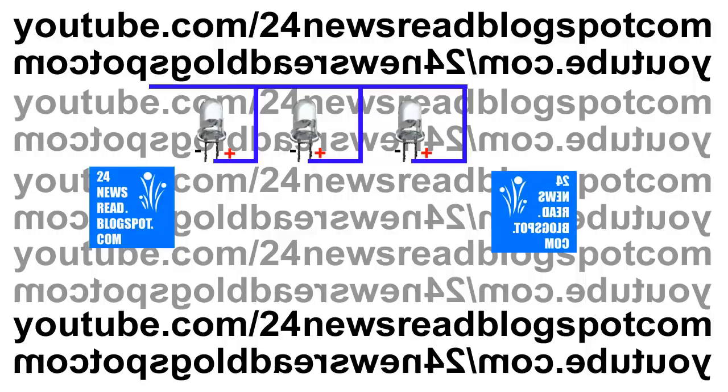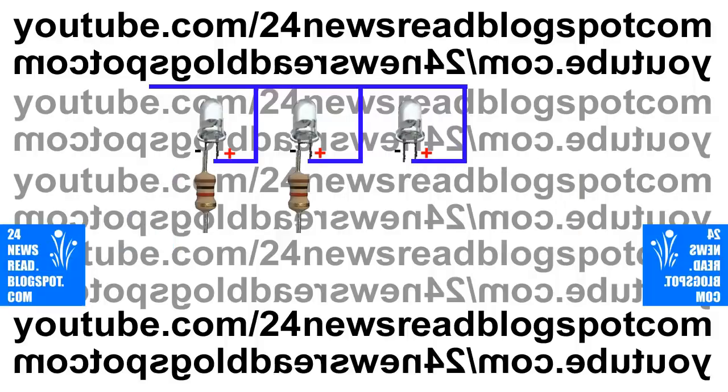Now join all plus together. Now join the two 1K resistors, this and this side.